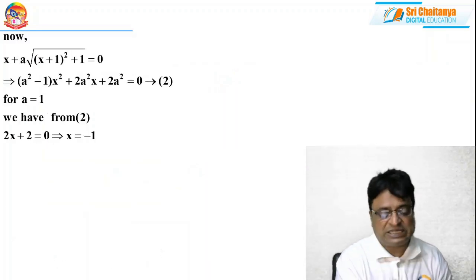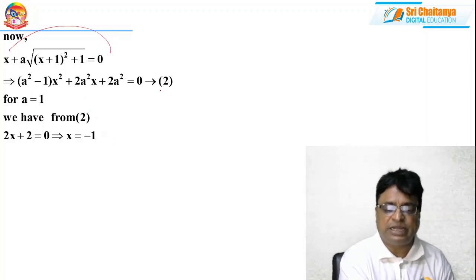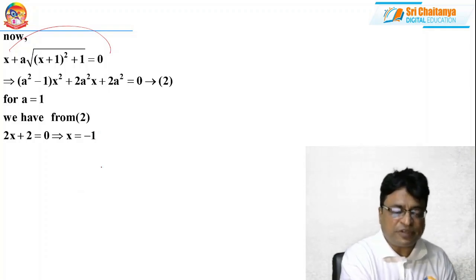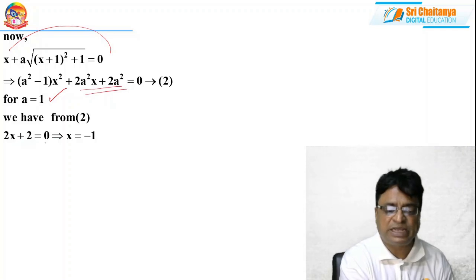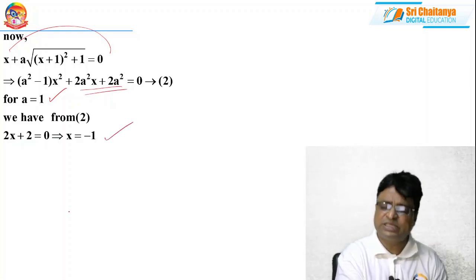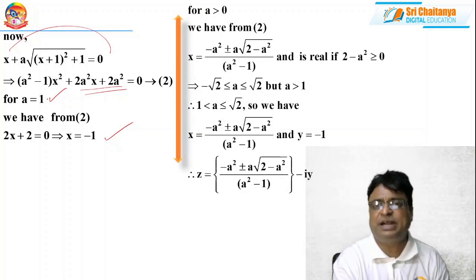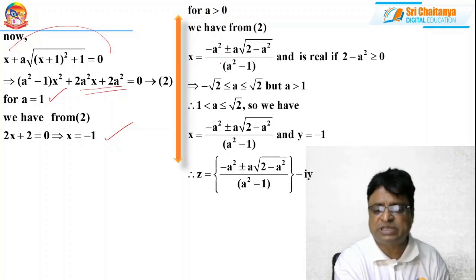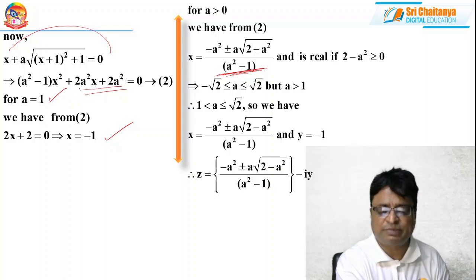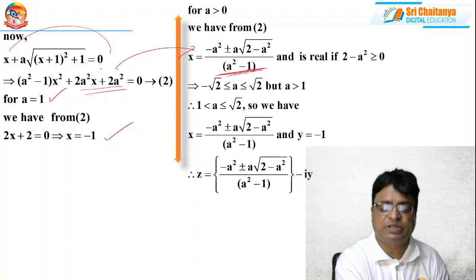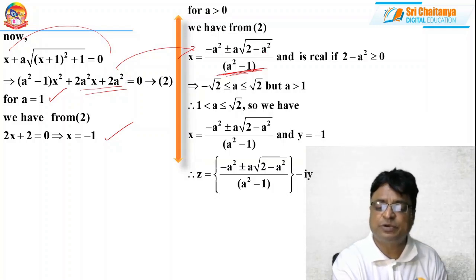With x + a·√(x²+1) = 0, squaring both sides after rearranging, I obtain a quadratic equation in x. Solving it using the quadratic formula x = (−b ± √(b²−4ac)) / 2a, and after simplification, x = (−a² ± a·√(2−a²)) / (a²−1). Special case: if a = 1, the coefficient of x² becomes 0, giving x = −1. Since x = −1 is negative, this is valid.